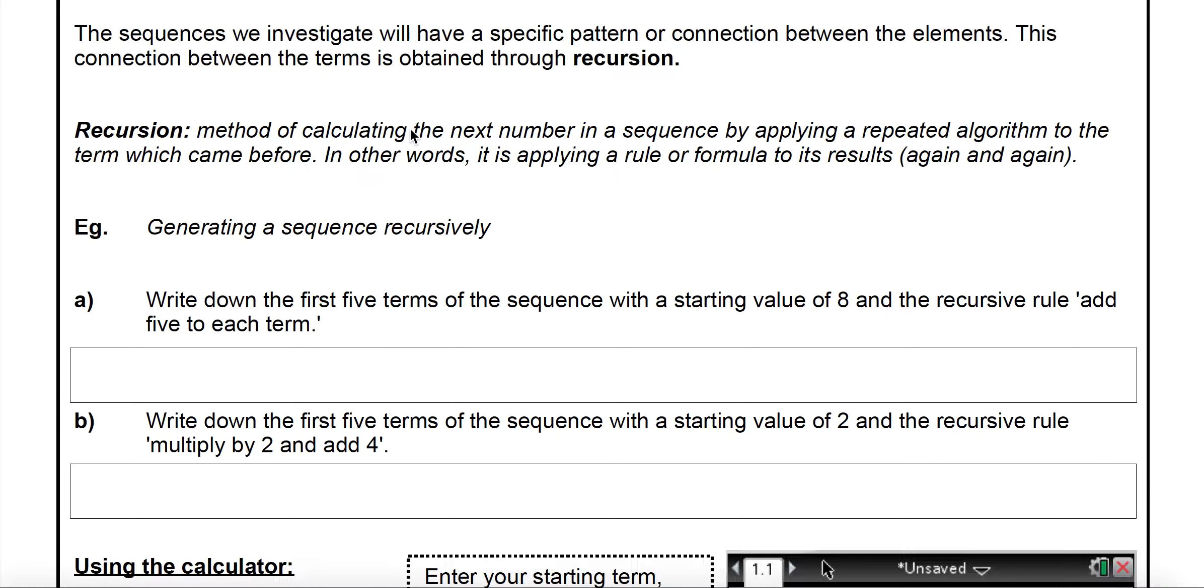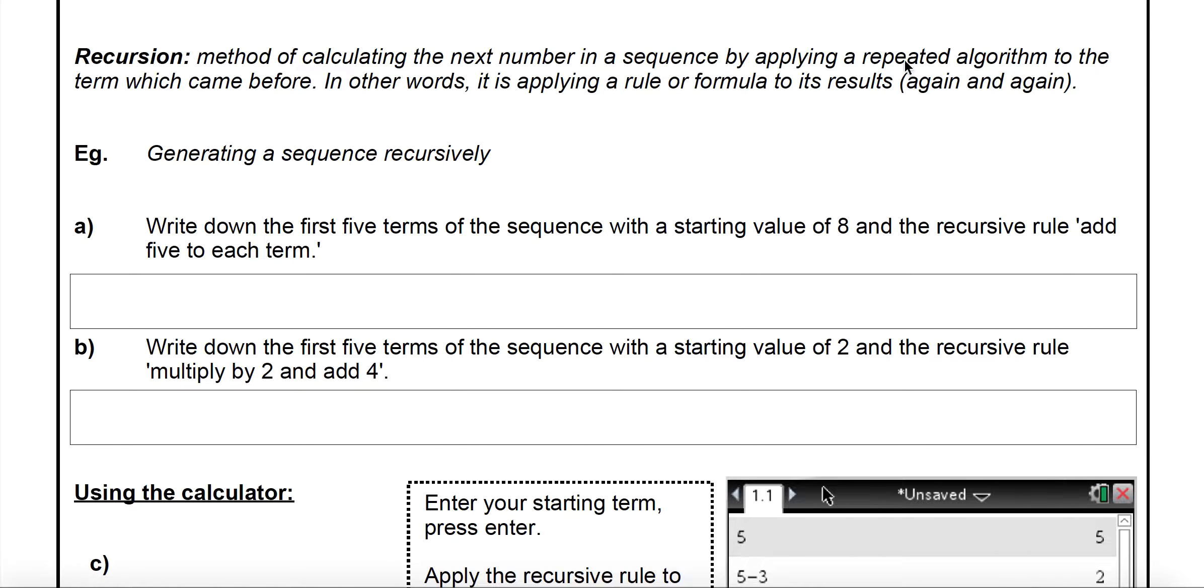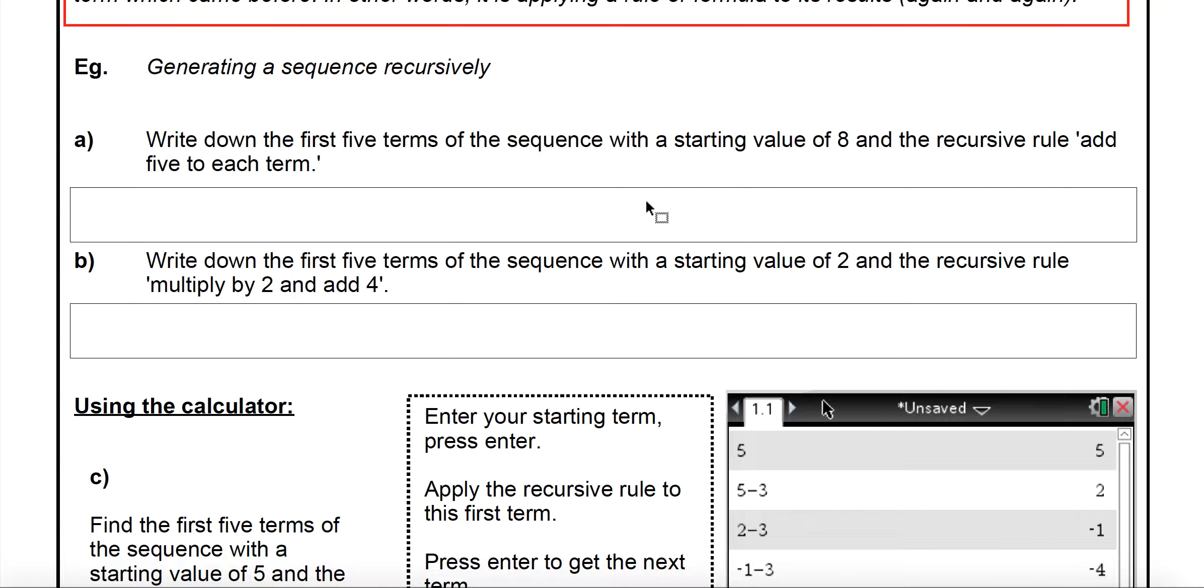So the ones we're going to be looking at have a pattern or connection between the elements, and to get that connection we use something called recursion. Recursion itself is a method of calculating the very next number in your sequence by repeating an algorithm. So you're repeating a calculation, and to get the next term you do that calculation to the term that's immediately prior to it in the sequence. I generate my first term, then I'll generate the second term using a rule, then I continue using that same rule and apply it to the results over and over again.